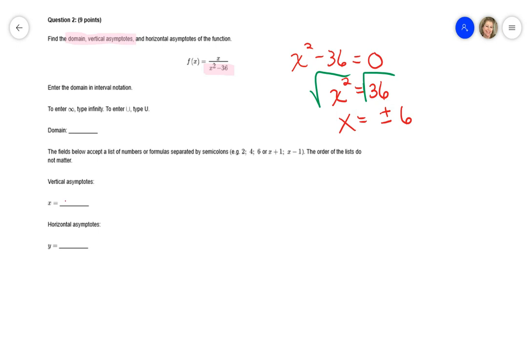So, for vertical asymptotes, it's either negative 6 semicolon 6. Because since 6 or negative 6 would cause the denominator to be zero, there is no answer for y when x is 6 or negative 6. So therefore, there's a vertical asymptote there.